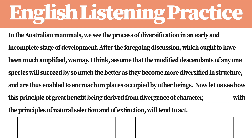In the Australian mammals, we see the process of diversification in an early and incomplete stage of development. After the foregoing discussion, which ought to have been much amplified, we may, I think, assume that the modified descendants of any one species will succeed by so much the better as they become more diversified in structure, and are thus enabled to encroach on places occupied by other beings. Now let us see how this principle of great benefit being derived from divergence of character, combined with the principles of natural selection and of extinction, will tend to act.